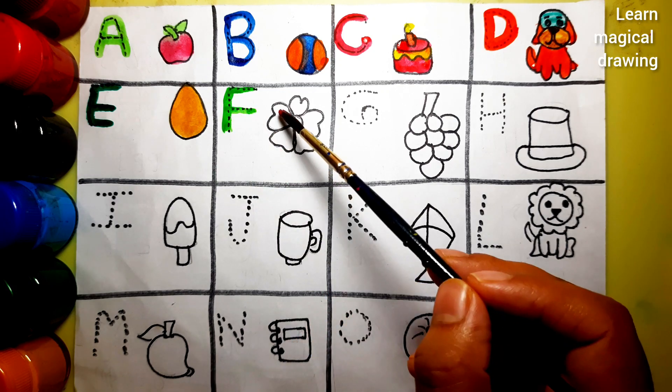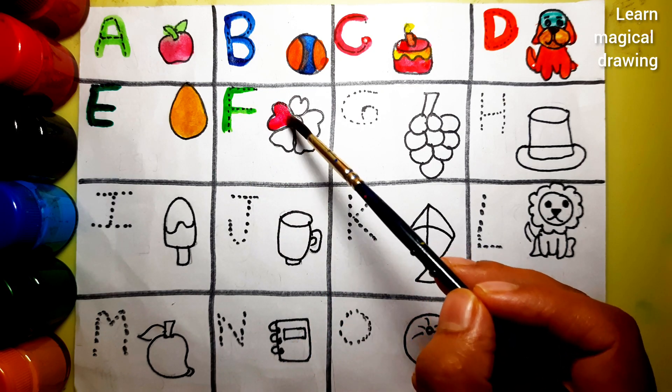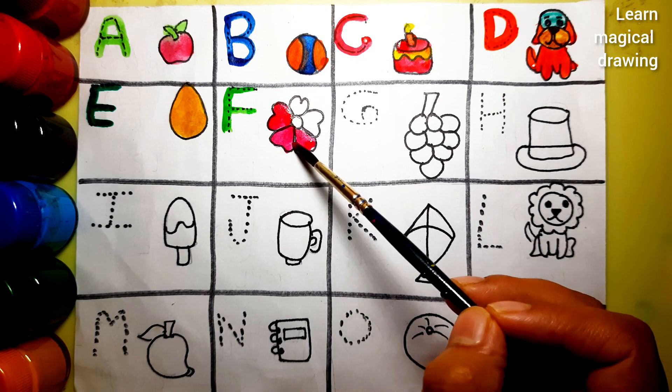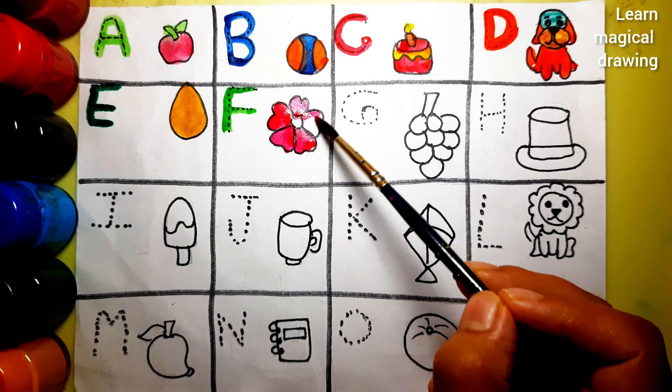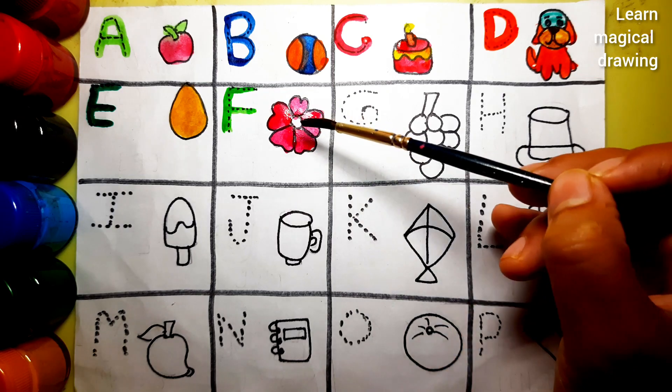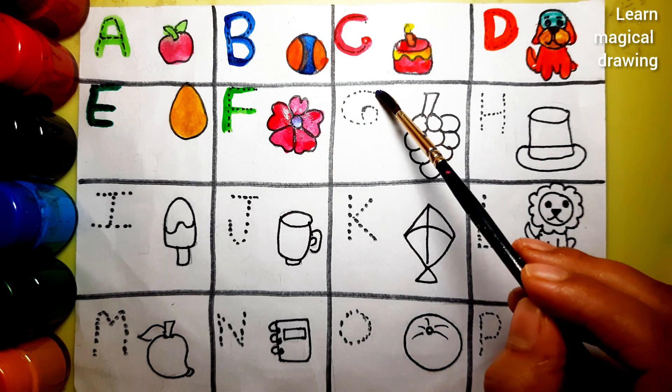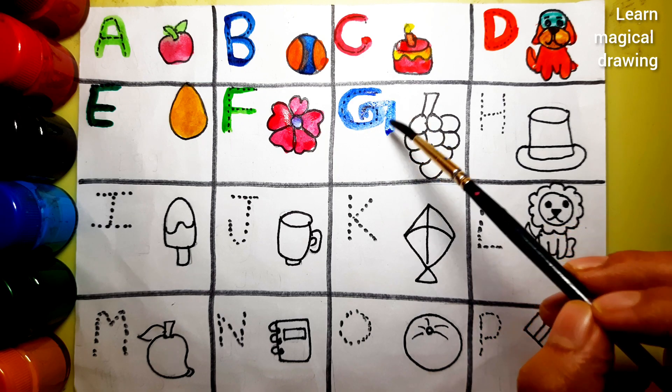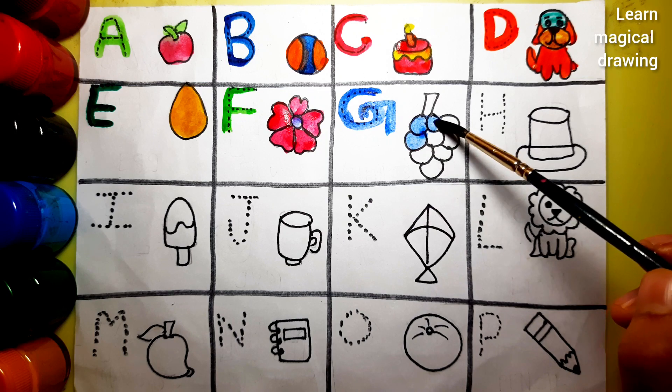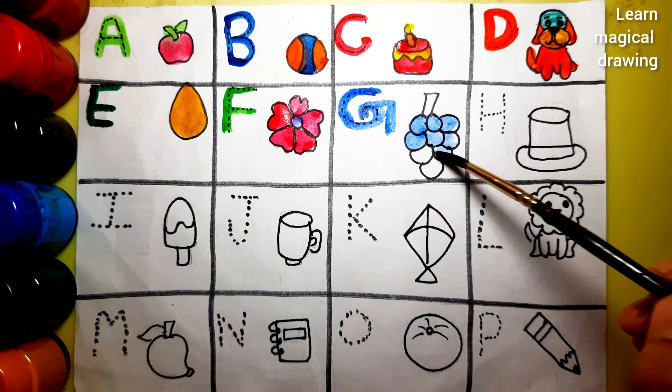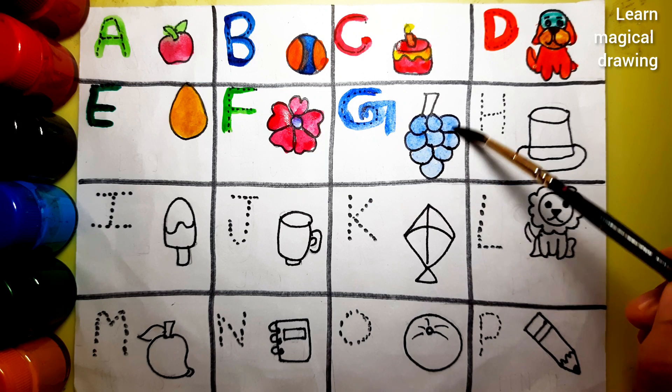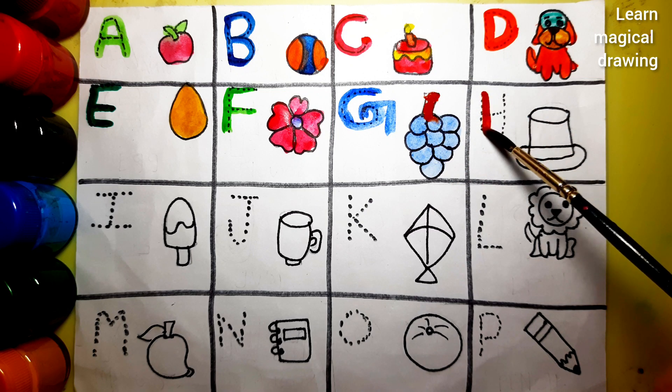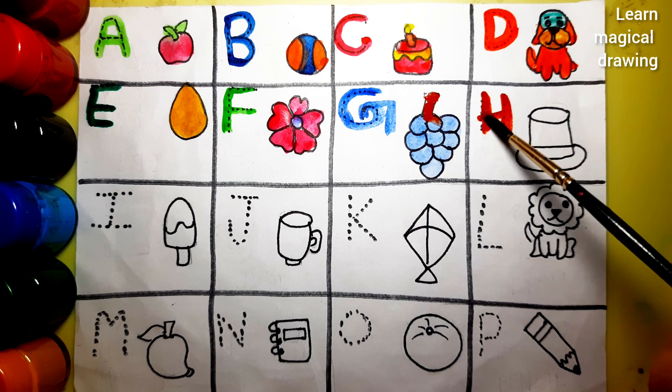F, F for Flower. G, G for Grapes. H, E for Head.